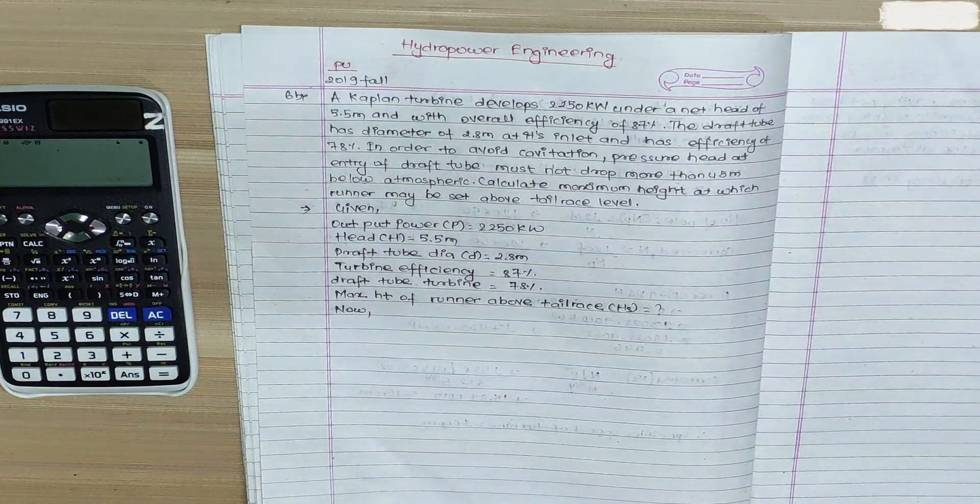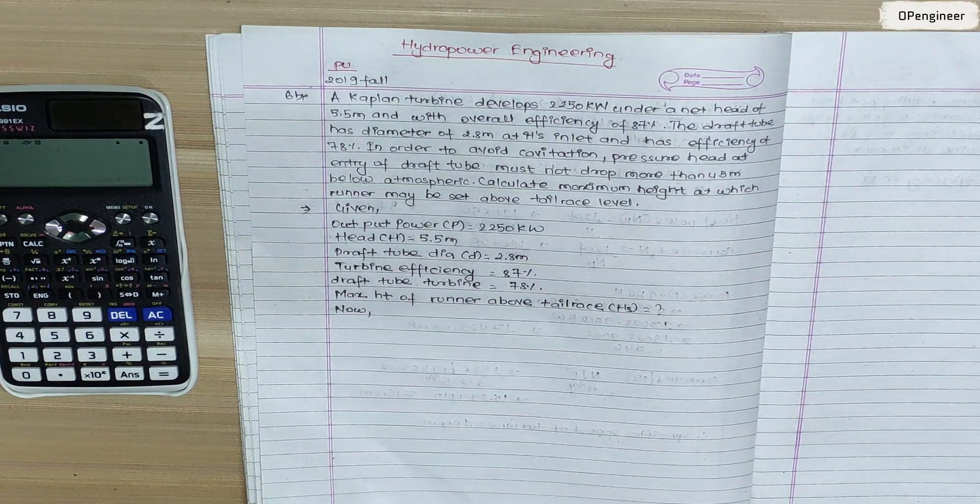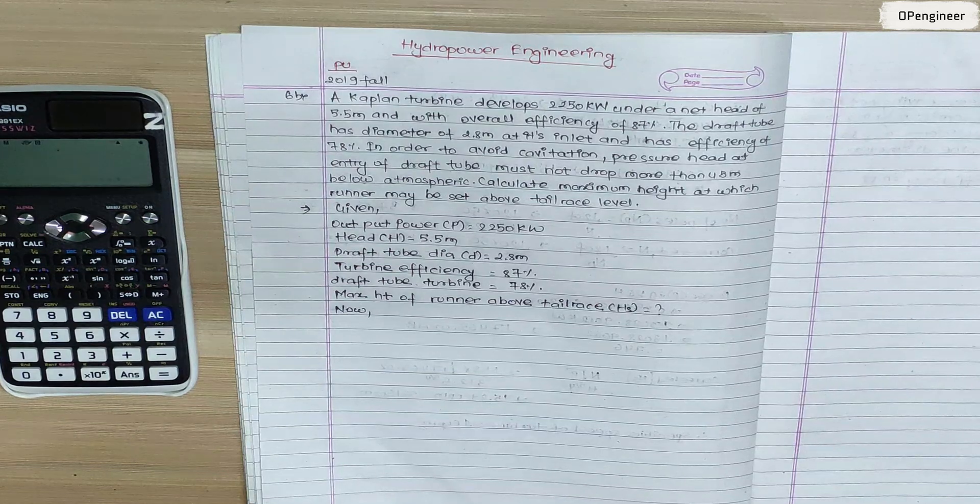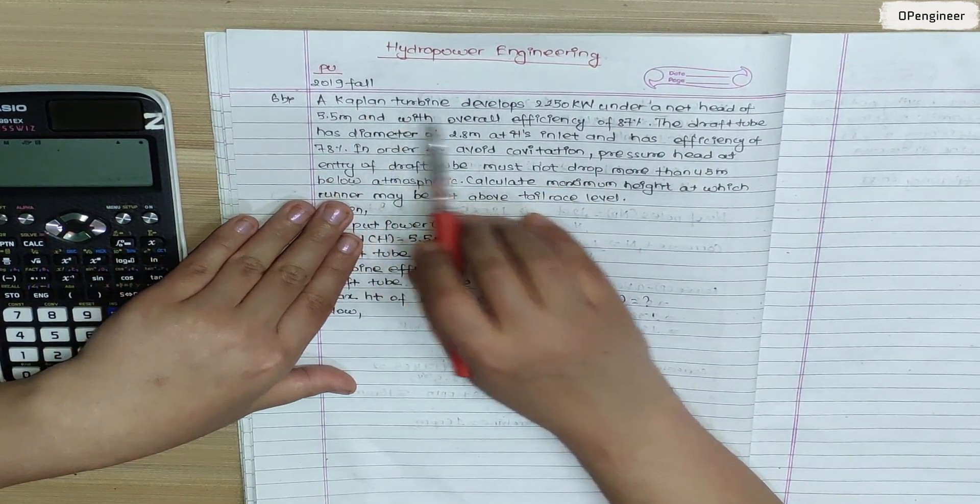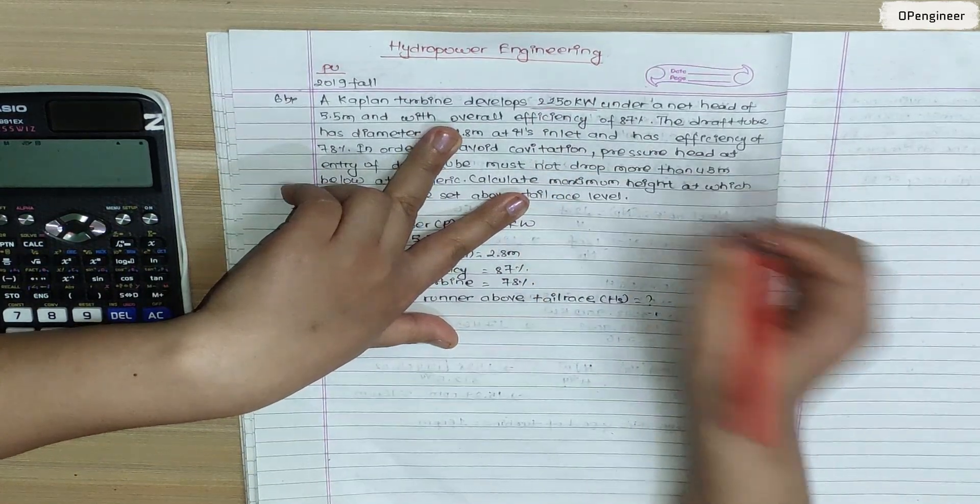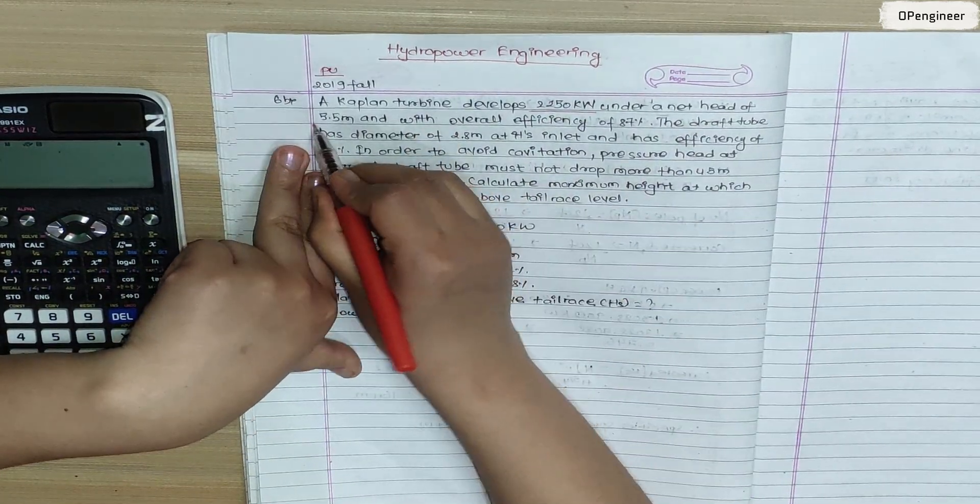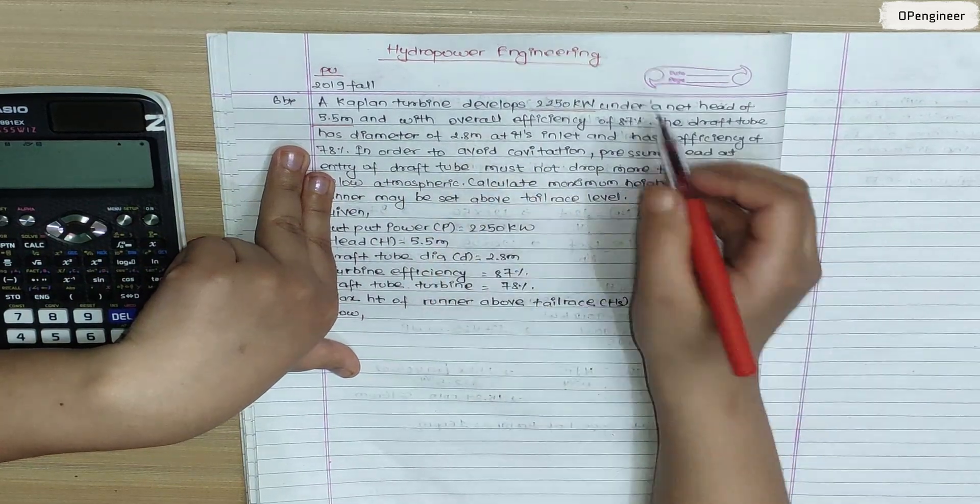Today we are going to talk about hydropower engineering at Bokhara University 2019 fall 6B. It is a carbon turbine that develops 2250 kW under a net height of 5.5 m with overall efficiency.